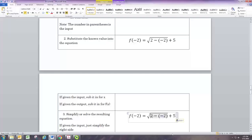We got 2 minus negative 2, which is 4; square root of 4, which is 2; and 2 plus 5, which is 7.